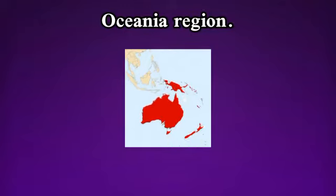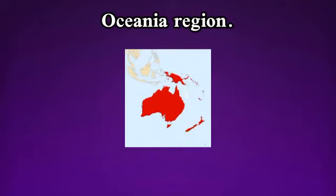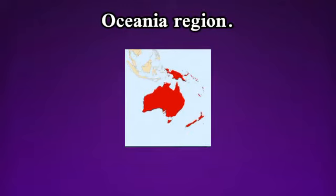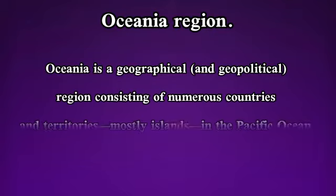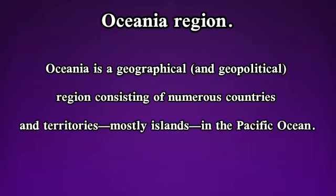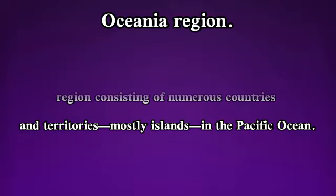Oceania region. What does Oceania region mean? Oceania is a geographical and geopolitical region consisting of numerous countries and territories, mostly islands in the Pacific Ocean.